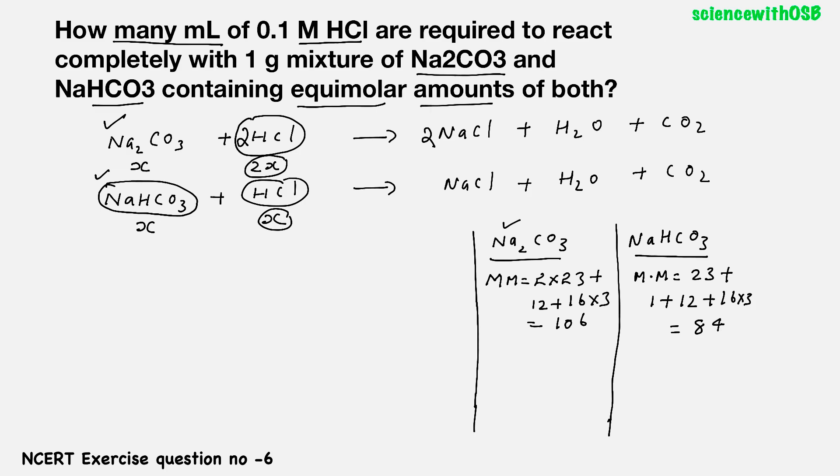What is the equation for number of moles? Number of moles is equal to mass by molar mass. So what is mass? Mass of Na2CO3 is number of moles into molar mass. What is number of moles? We take it as x. x. Here x you can see. So x into 106. And what about NaHCO3? Again, mass is equal to n into molar mass. What is n? n is same x, equimolar. So x into 84. So it is 84x and here it is 106x.